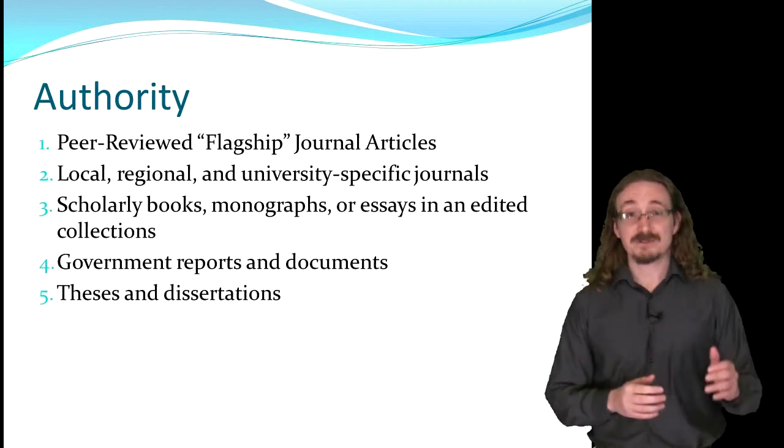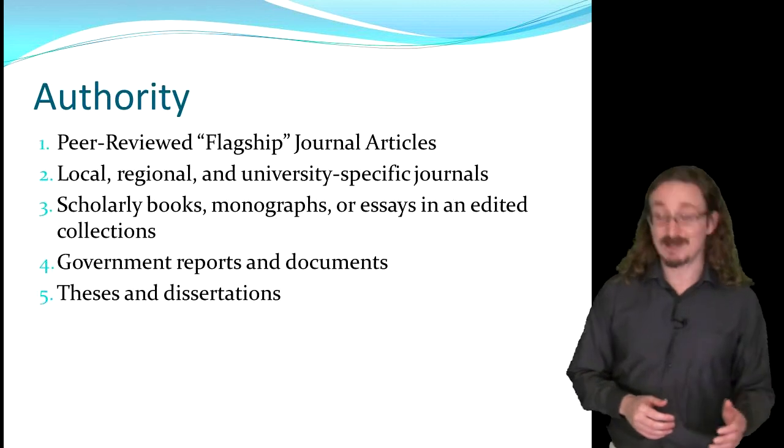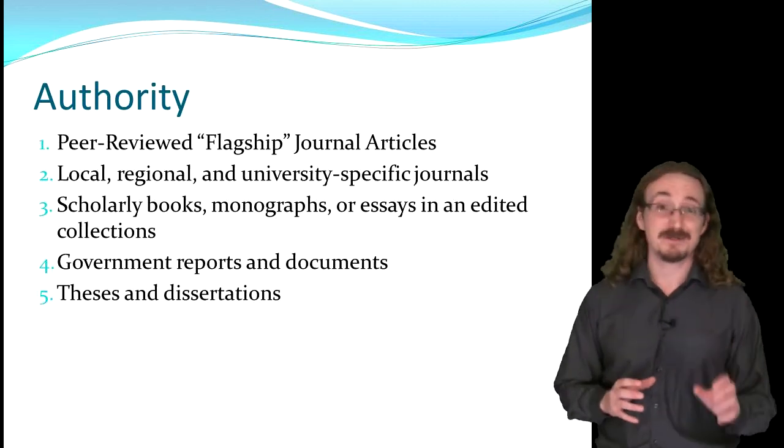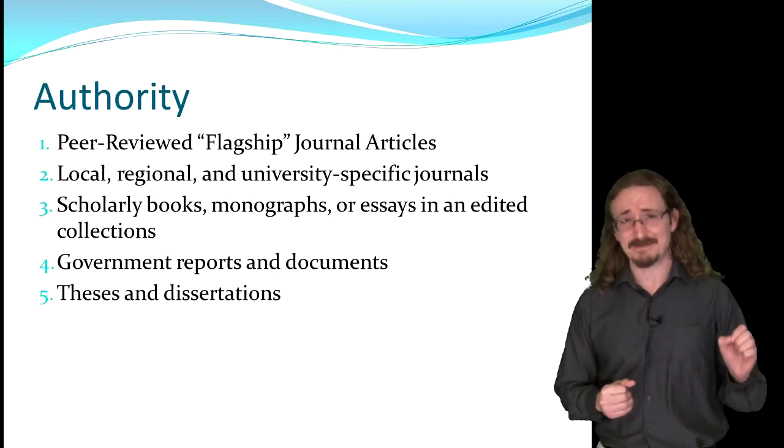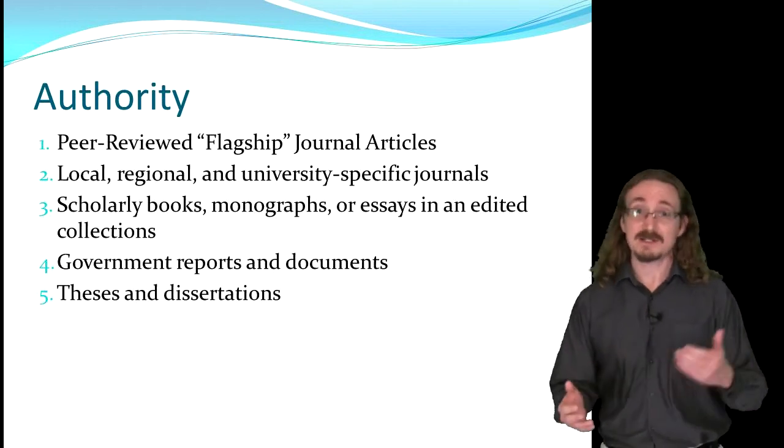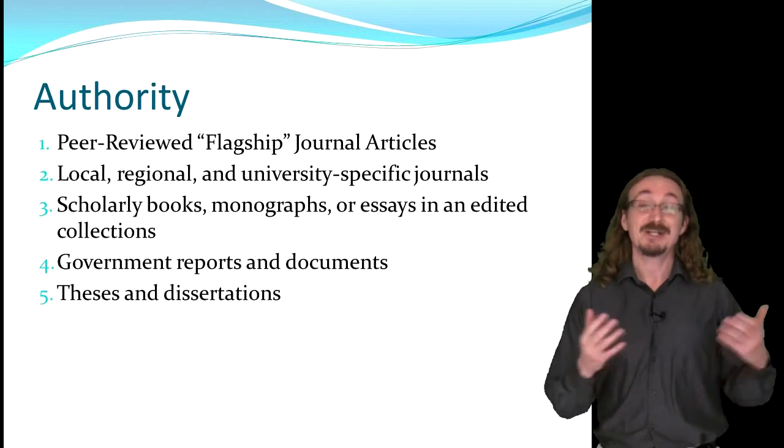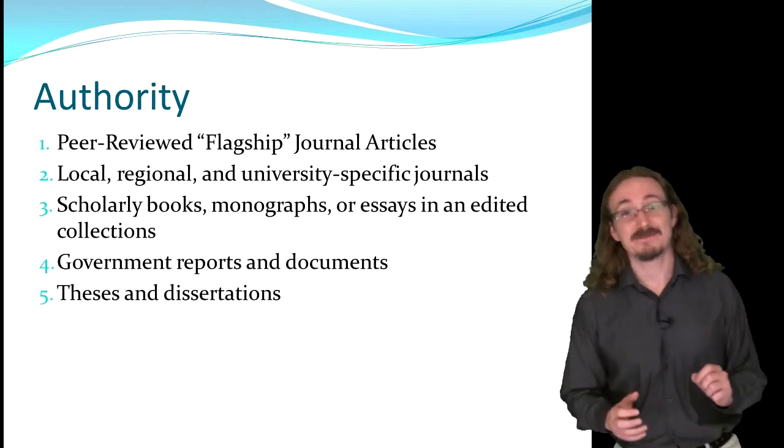So after the journals, then you have scholarly books. And a monograph just means a scholarly book written by one person. Usually though, a scholarly book will be what's called an edited collection. So they'll have 13 to 16 different articles in there, or chapters, and each one will be written by a different set of scholars.